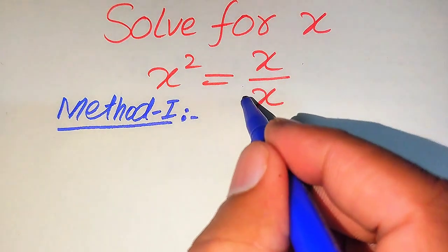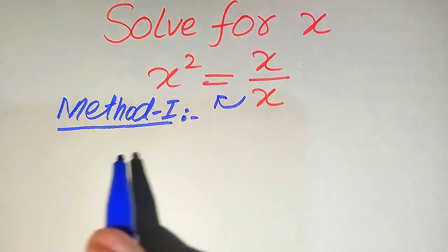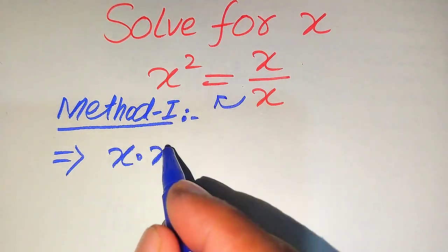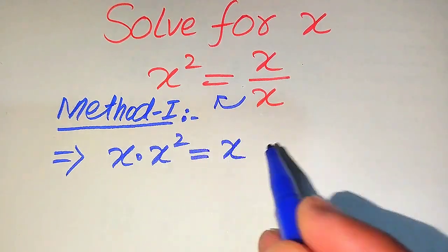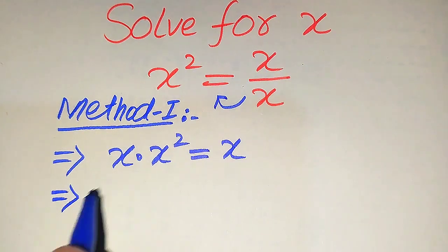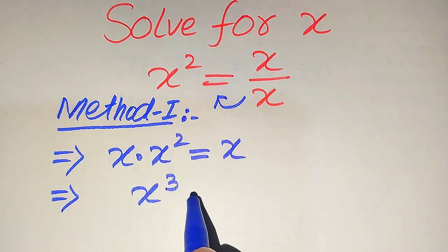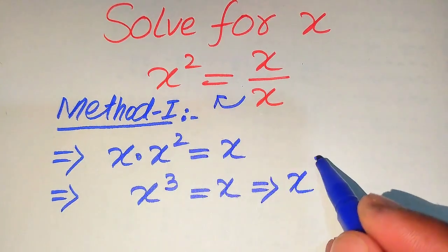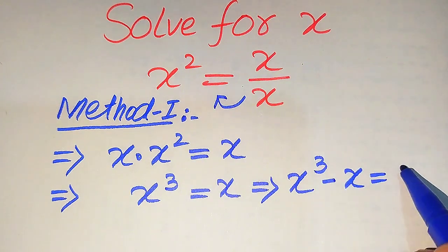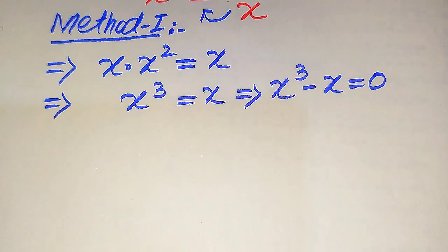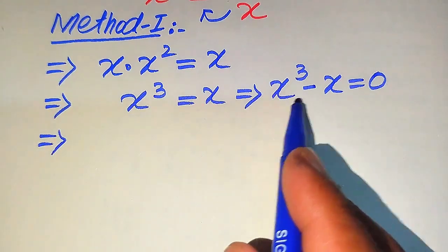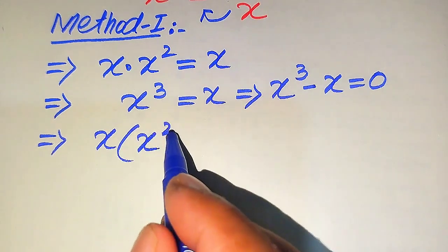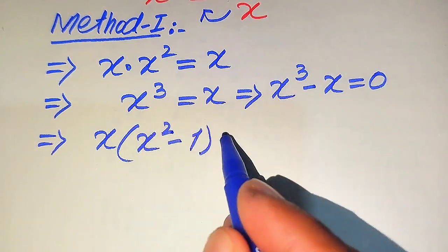In the first method, we move x to the left hand side. Since x is divided on the right hand side, when moved to the left it is multiplied, giving x times x squared equals x. Then x times x squared equals x cubed, so x cubed equals x. Moving x to the left hand side gives x cubed minus x equals zero. Taking x as a common factor, we get x times (x squared minus one) equals zero.